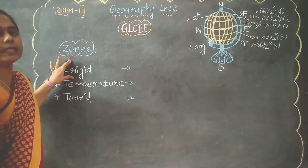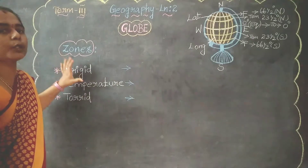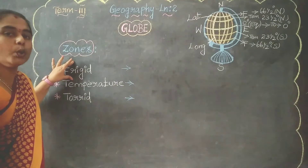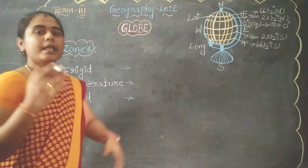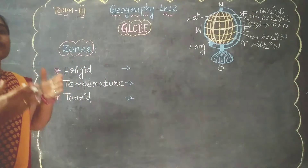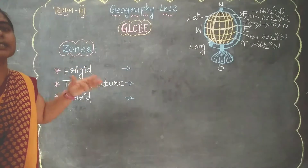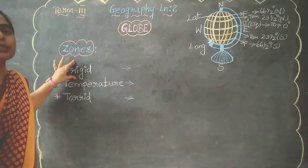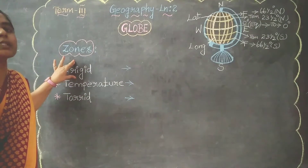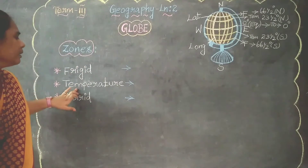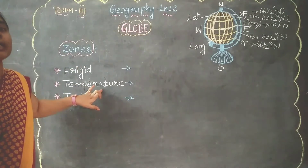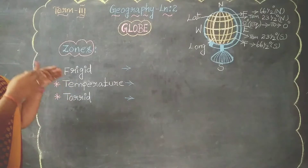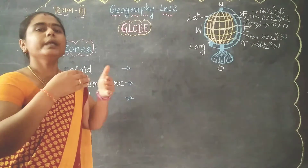What is meant by the frigid zone and how does it work? The frigid zone contains very low temperature because the sun's rays fall in this region at a low angle — they do not fall directly. So it contains cool, low temperature. The temperate zone contains moderate temperature because the sun's rays fall slightly in this region, giving medium temperature.